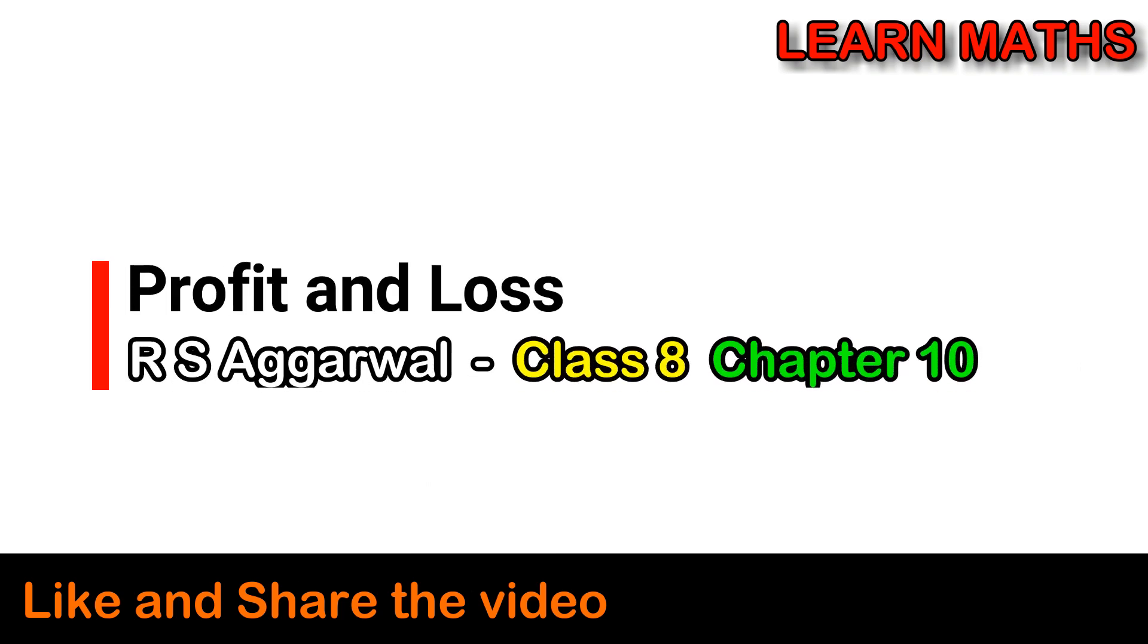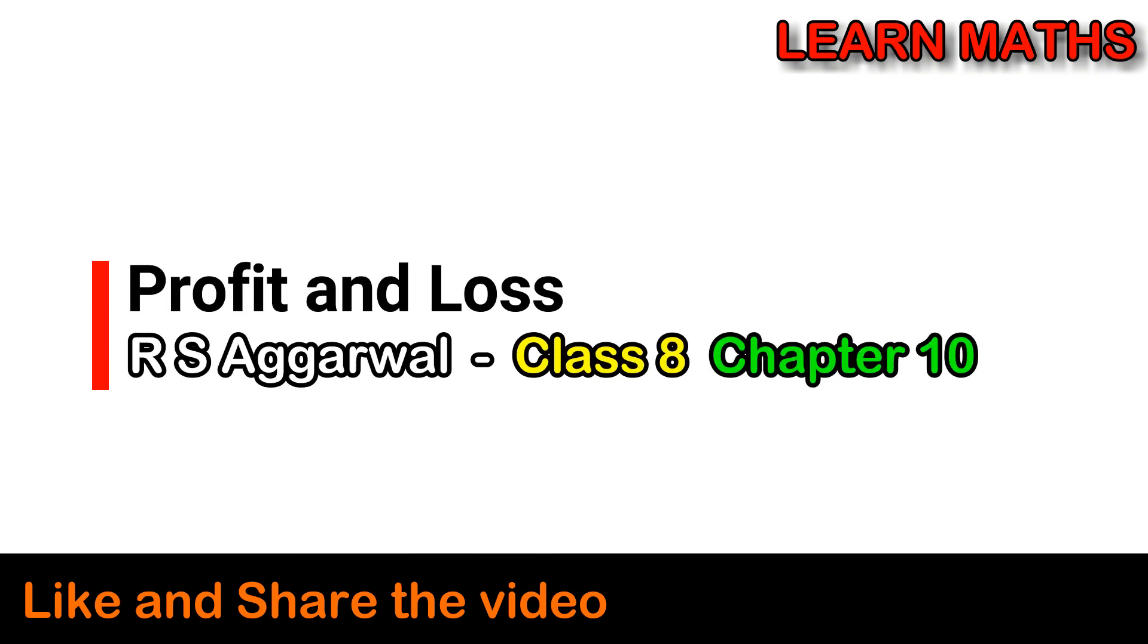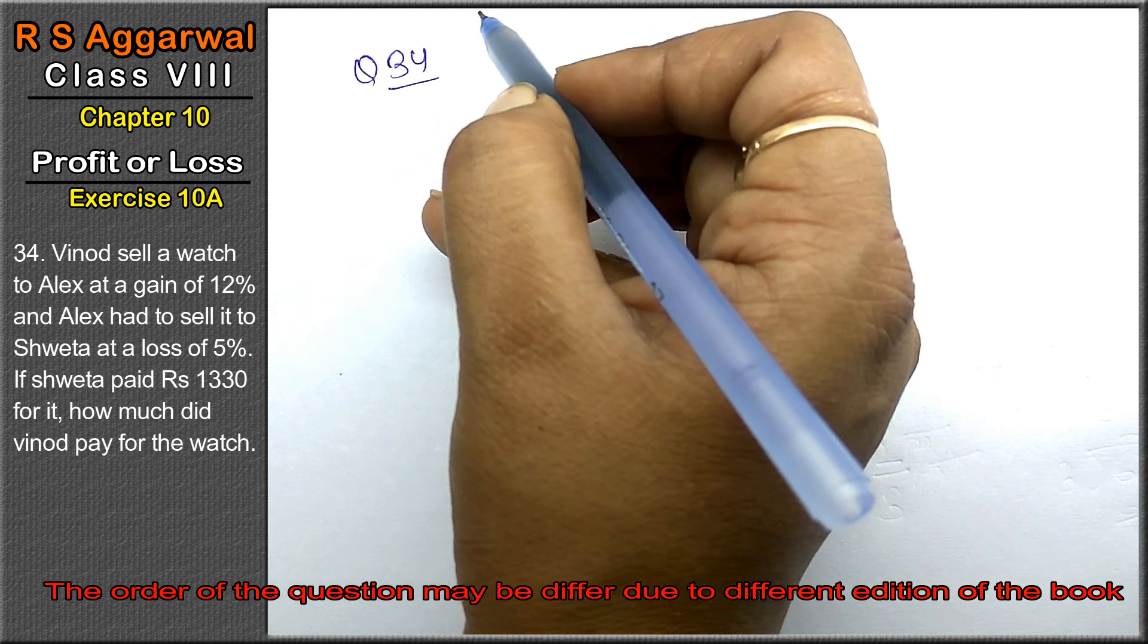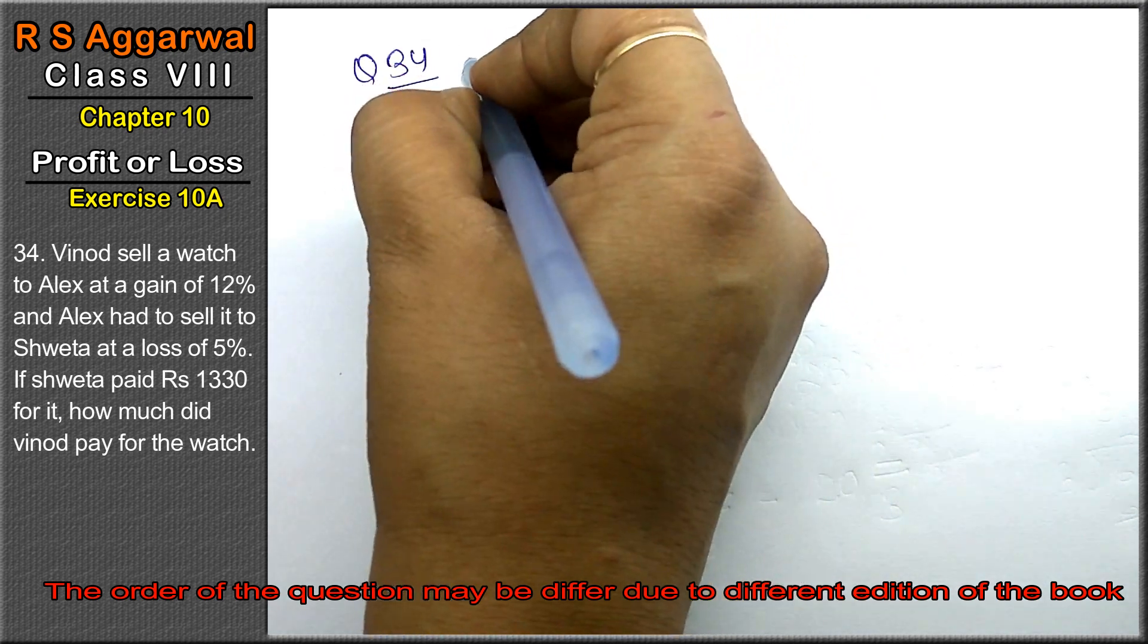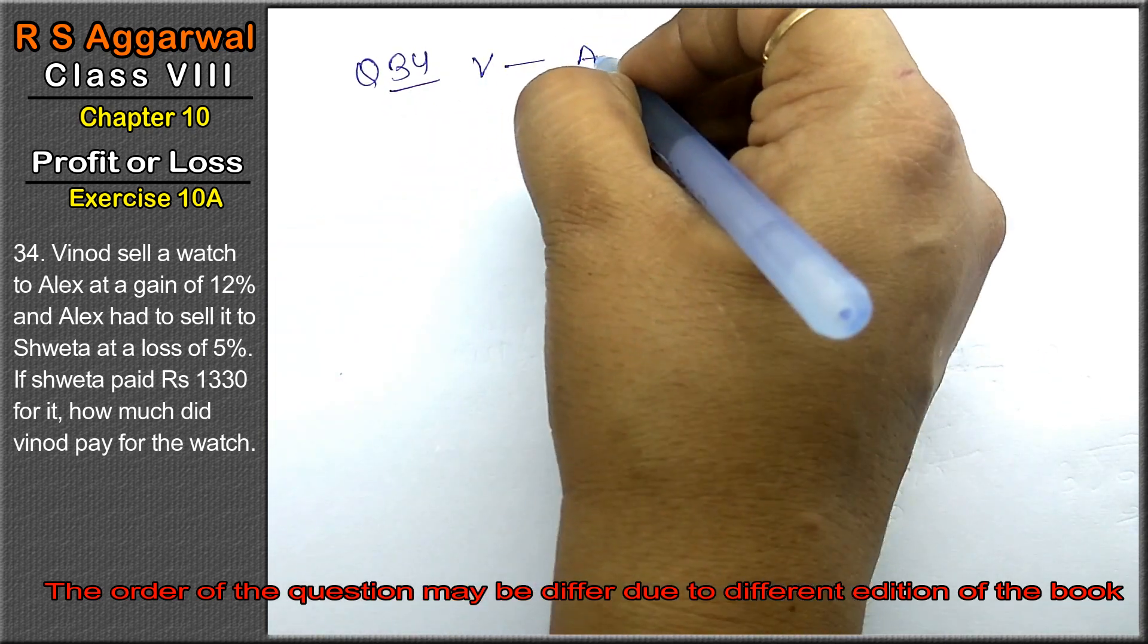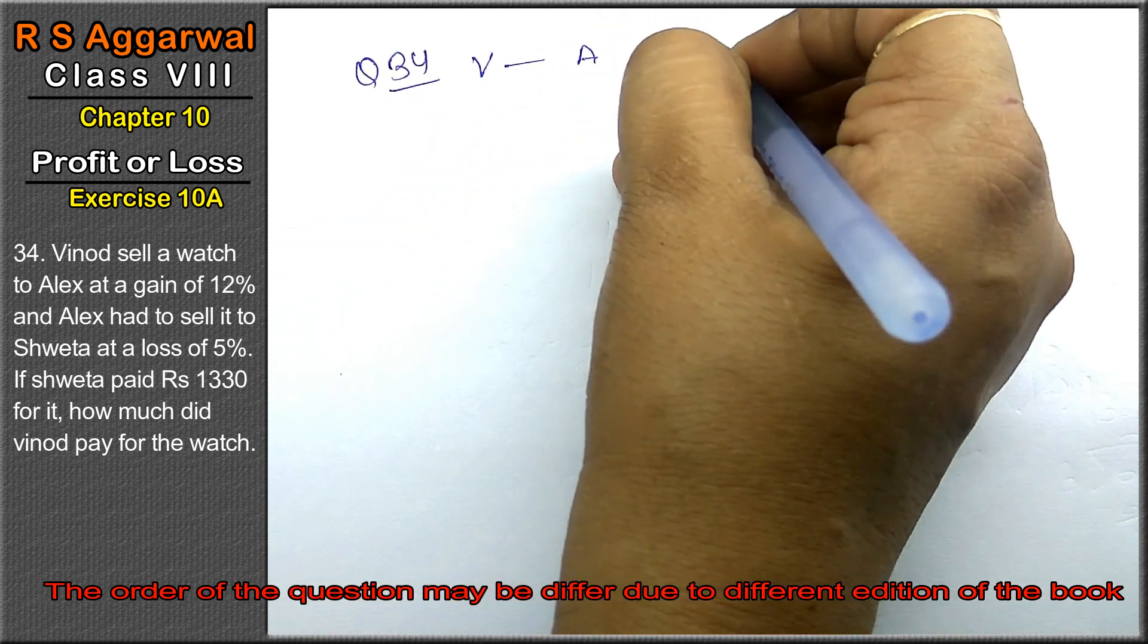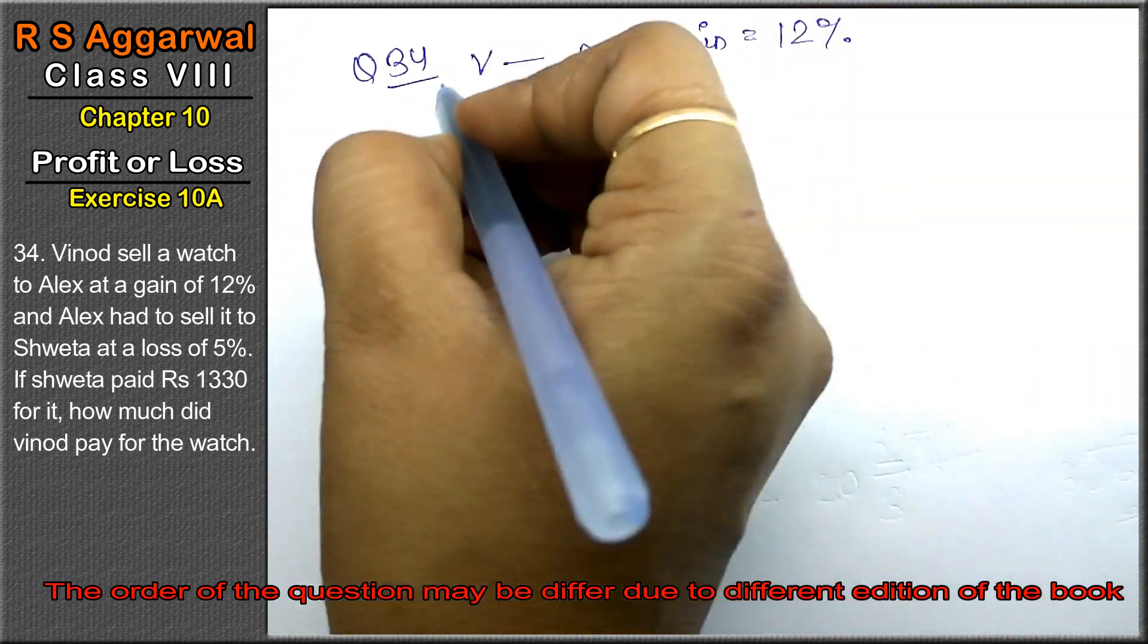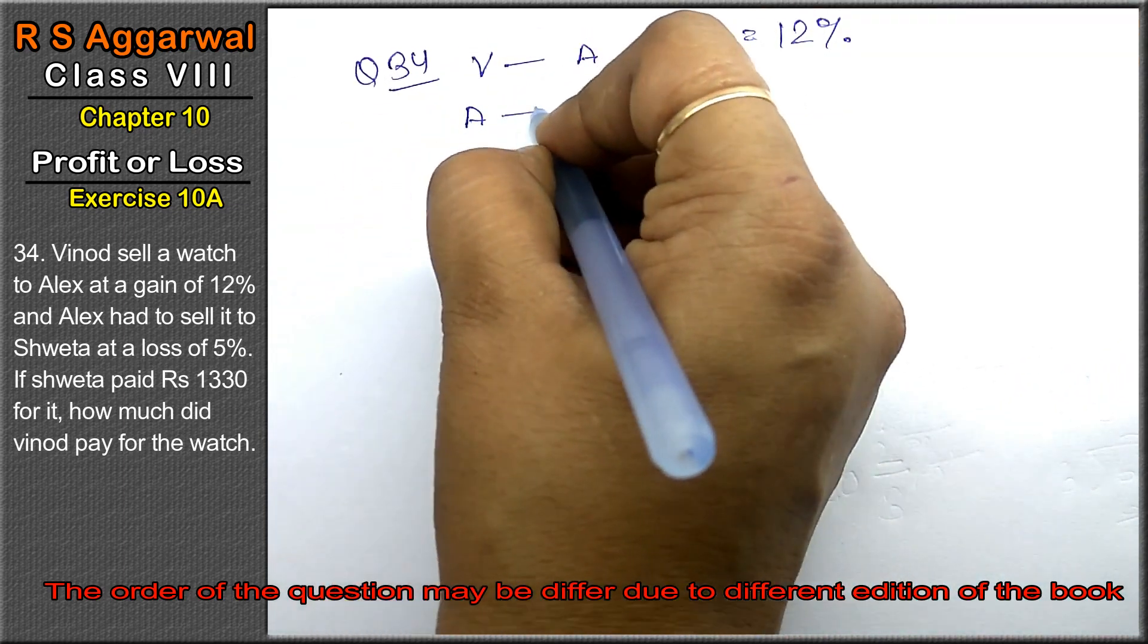Let's do question number 34 of exercise 10A, that is profit and loss. Question number 34 is: Vinod sold a watch to Alex at a gain of 12%, and Alex sold it to Shweta